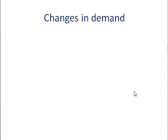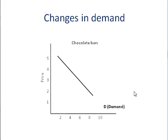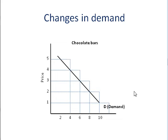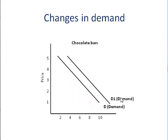What does that look like when we construct a new demand curve? Let's take a look. Here's our initial demand curve, and then here is our newly constructed demand curve after the change in income. You see what's happened here is the change in income has caused us to completely change the demand curve, and we call that a change in demand, or a shift in demand.